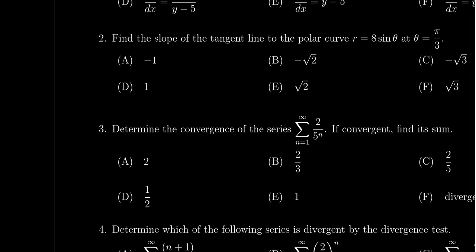Let's take a look at the solution to question 2 for the final exam for our course, Math 1220. We're asked to find the slope of the tangent line to the polar curve r equals 8 sine of theta at the point theta equals pi thirds.